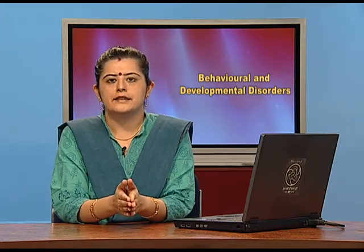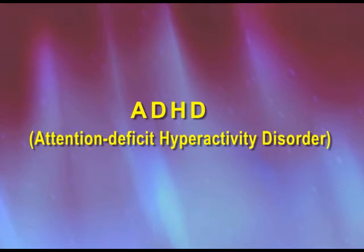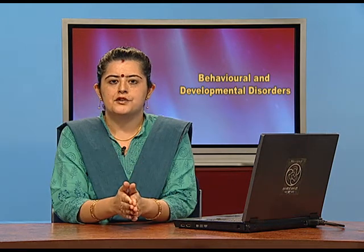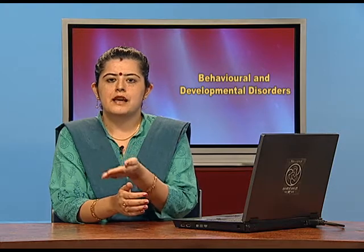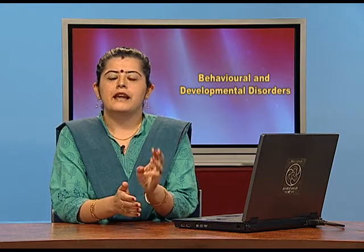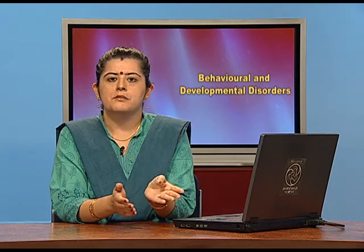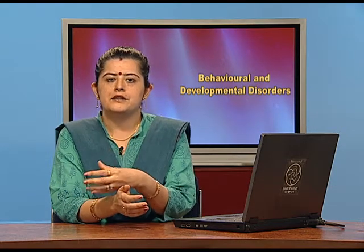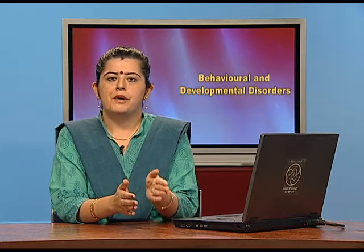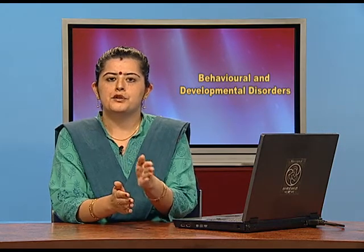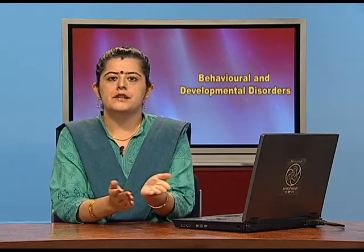Let's start with the first category of externalizing disorders: ADHD. ADHD involves attention deficit, hyperactivity, and impulsivity — three categories. A child having ADHD ideally should be diagnosed by seven years of age so that if the level is high, medicines can be started. Not every child with ADHD will have all three categories; it's a combination — a child may have impulsivity and hyperactivity, another may have impulsivity and attention deficit.